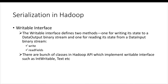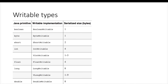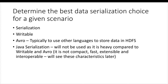The default serialization is Writable serialization, which is driven by an interface called the Writable interface which has two methods: write and readFields. You can overwrite those and make it extensible to create your own serializable classes for Hadoop. Out of the box there are a bunch of classes in the Hadoop API which implement the Writable interface, such as IntWritable, Text, etc. These cover primitive Java types: BooleanWritable, ByteWritable, ShortWritable, IntWritable, etc. You don't need to memorize these as they are more relevant for the developer; just focus on the best data serialization choice for a given scenario.